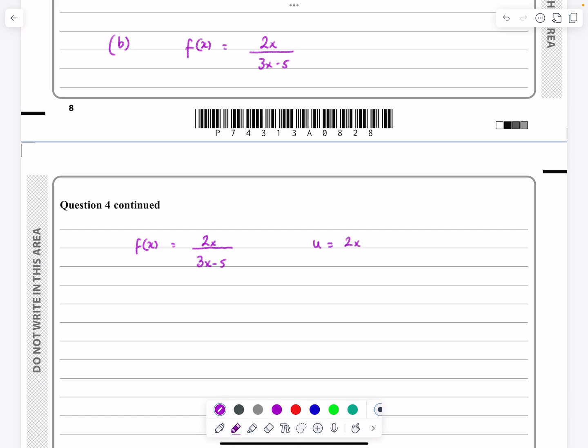u is equal to 2x, v is equal to 3x minus 5. I always lay out my quotients like this, you'll see from other videos. Differentiating that gives me 2. Differentiating 3x minus 5 gives me 3.